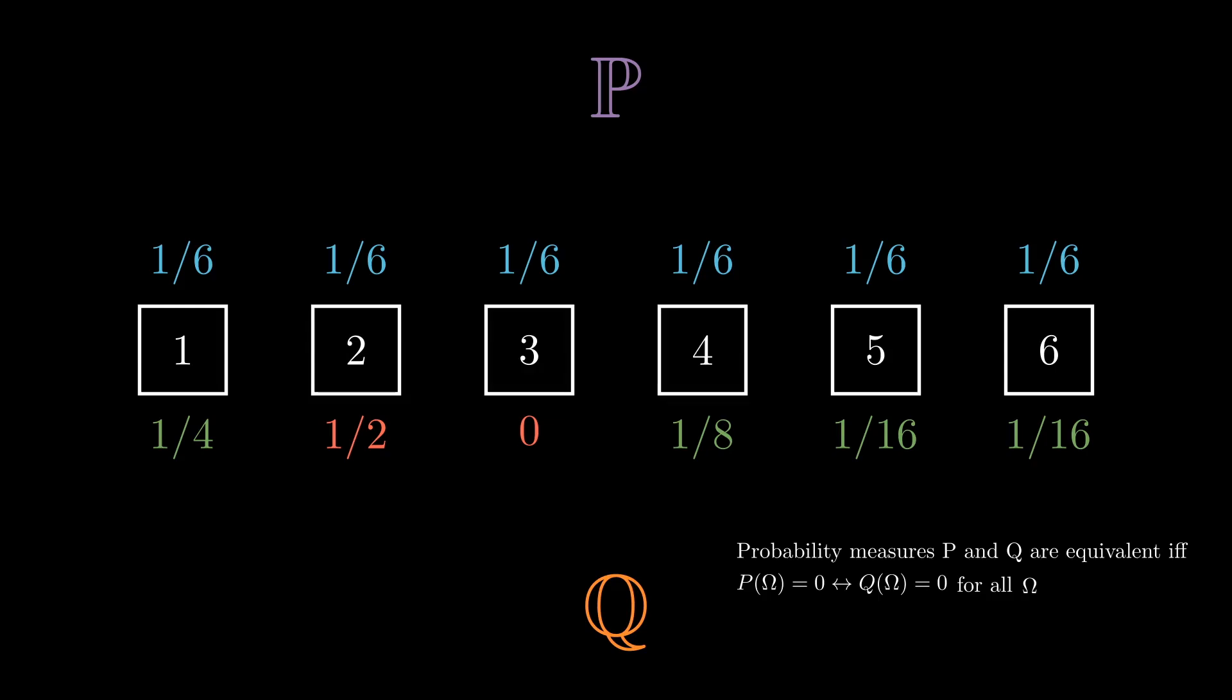If we change one of the numbers to 0, they are no longer equivalent. Changing one of the numbers under P, however, makes them equivalent again.